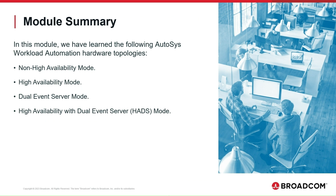In this module, we have learned the following Autosys Workload Automation hardware topologies: Non-High Availability Mode or Single Server Mode — the basic topology that doesn't provide high availability; High Availability Mode — provides a high availability solution except for the Autosys Event Server; Dual Event Server Mode — implements high availability for the Autosys Event Server with two databases; and High Availability with Dual Event Server — combines High Availability Mode with Dual Event Server Mode to implement high availability for both the Autosys servers and the Event Server.